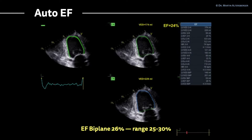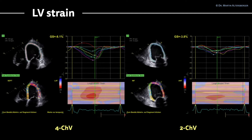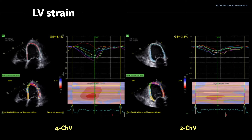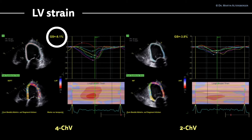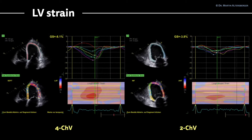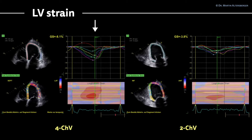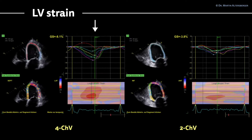So we have a case of HFrEF. Looking at strain imaging, LV strain in the 4-chamber view is also severely reduced. The global strain written in the loop is minus 8.1%. Remember that the normal value is in the range of minus 18 to minus 20. Looking at the curves, there is some contraction present, but in one segment — the red segment — there is even dyskinesia present.